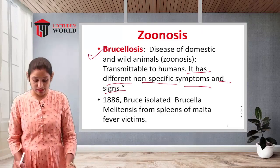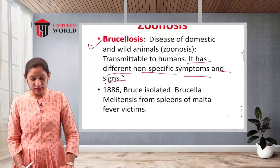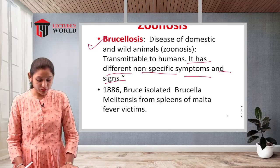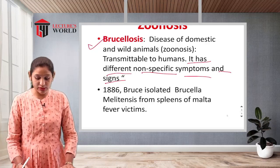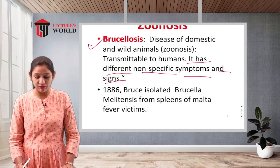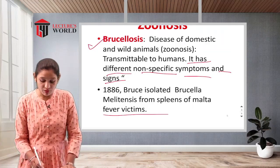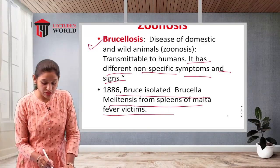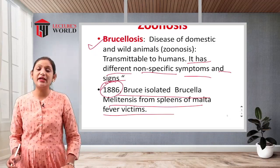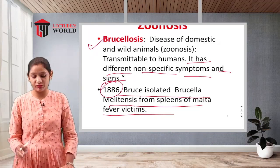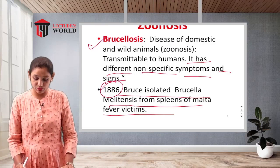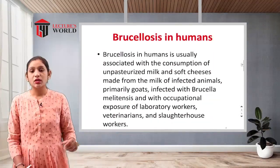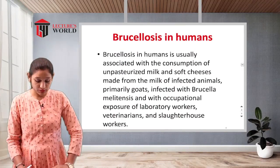In 1886, Bruce isolated Brucella melitensis from the spleens of Malta fever victims. This was the first identification of this zoonotic type of Brucellosis infection, and the disease was later named after Bruce.